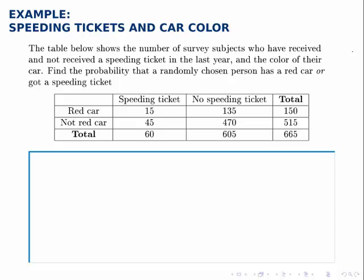Here's another contingency table, or two-way table. A survey was given, and this table breaks down the number of people who responded who have received or not received a speeding ticket in the last year, and then whether their car was red or not.